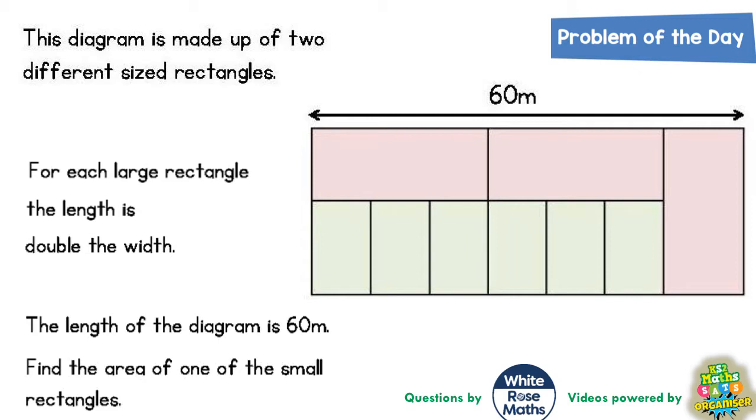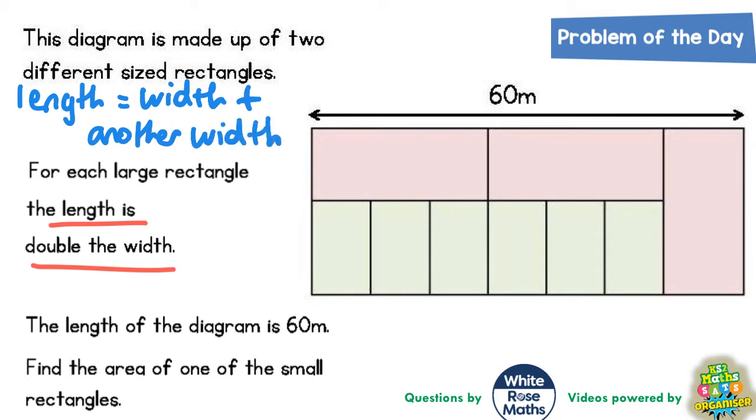It says for each large rectangle the length is double the width. That's going to be crucial. So what this means is that one length is the same as a width plus another width. Because each length is two lots of the width, double the width. A width plus another width.